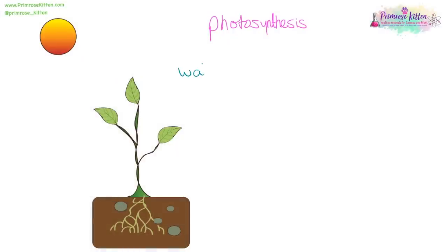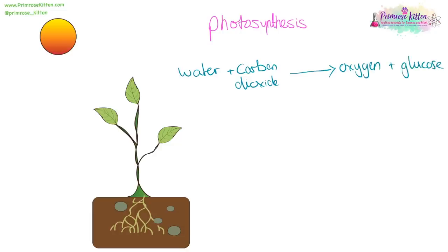Photosynthesis is going to take water and carbon dioxide, and turn it into oxygen and glucose. We can take light and put it above the equation, but do not put it in the equation because it is not a reactant. It's just a condition that's needed. You also need to know the symbols: water is H2O, plus carbon dioxide CO2, goes to oxygen O2, plus glucose C6H12O6.